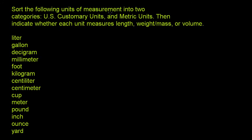We're asked to sort the following units of measurement into two categories: US customary units and metric units. So these are just two different systems, and you'll get more and more familiar with them. Then indicate whether each unit measures length, weight, mass, or volume. So let's do the first. Let's see which of these are US customary units versus metric units.